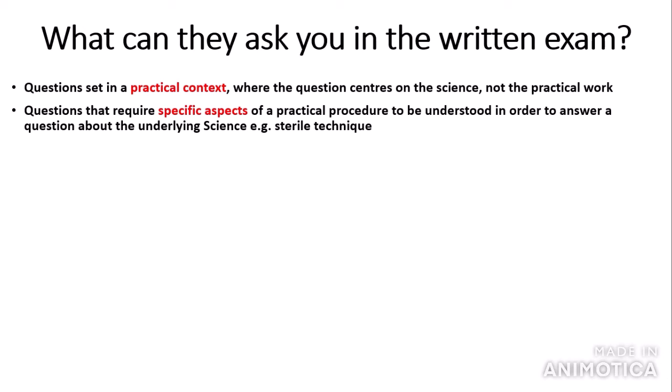They could also ask you questions that require specific aspects of practical procedure to be understood in order to answer a question about the underlying science. For example, sterile technique is used in the sixth required practical. You need a good understanding of key practical procedures so you can apply that knowledge to the underlying science. In the case of sterile technique, you might use alcohol — you could explain how alcohol kills bacteria by dissolving the phospholipid bilayer.